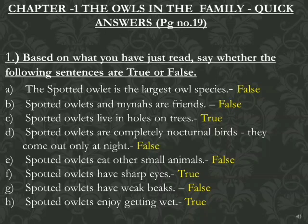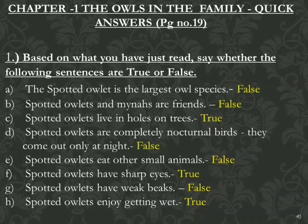Number D: Spotted owlets are completely nocturnal birds — they come out only at night. Nocturnal means the birds which come out at night. The answer will be false, because spotted owlets also come out in the daytime, as we have read in this story. Number E: Spotted owlets eat other small animals. False. Number F: Spotted owlets have sharp eyes. True.